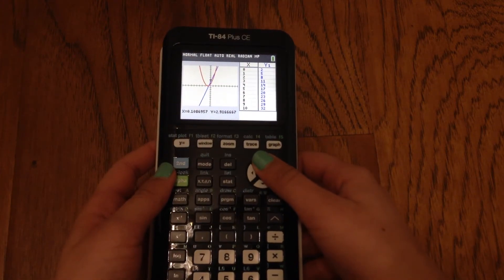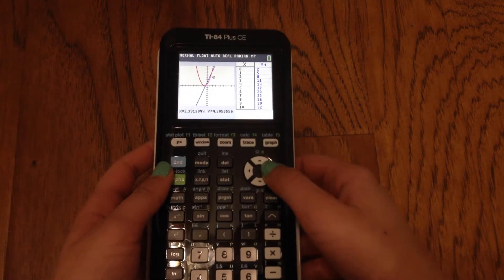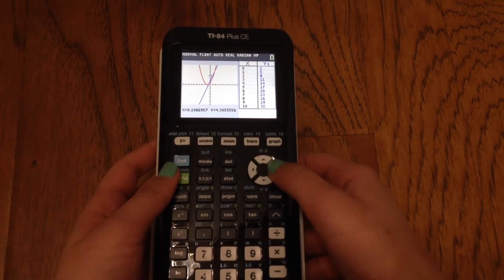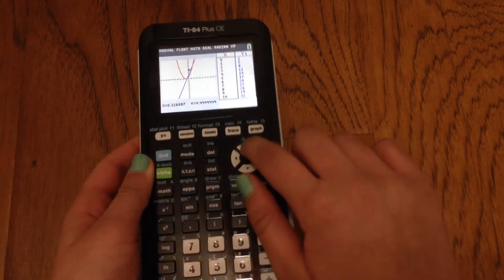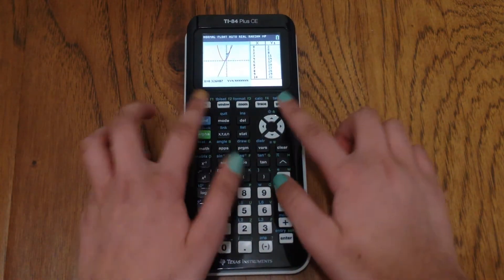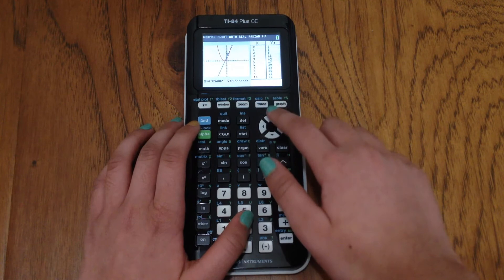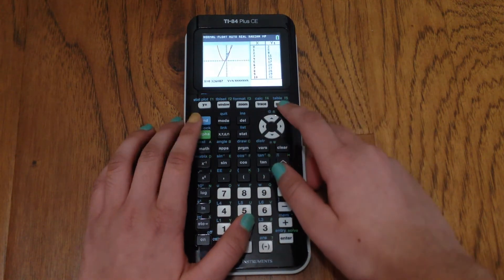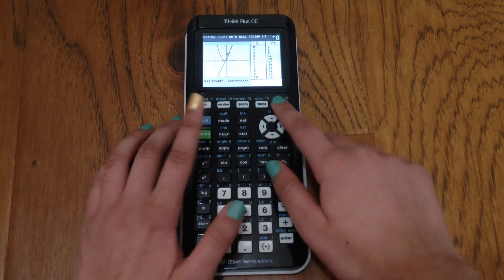You'll notice that by default, you're on the graph, on the side of the graph, as in when you're selecting things. But the way to navigate over to select the table, select and scroll on the table, is simply to go second graph.